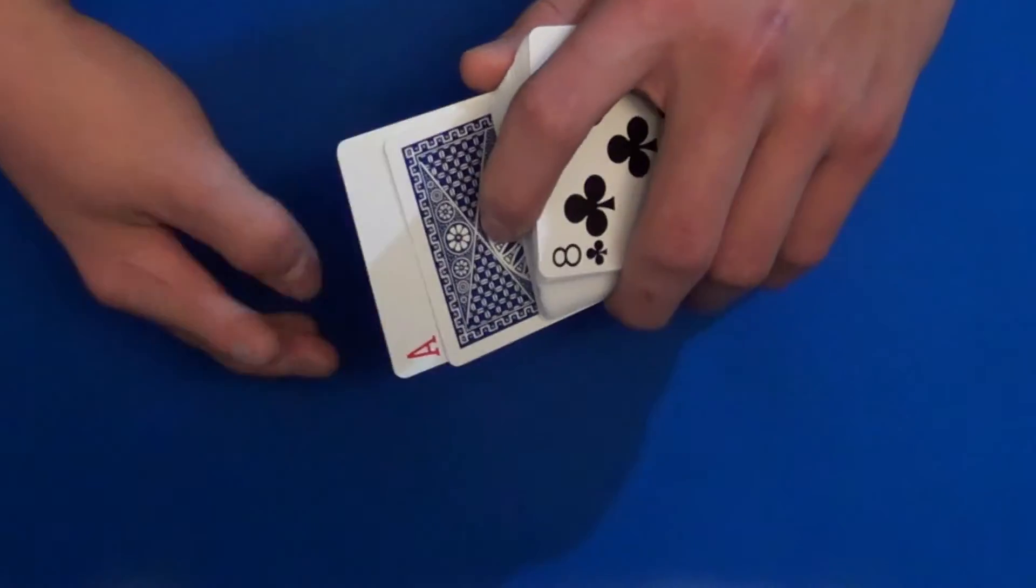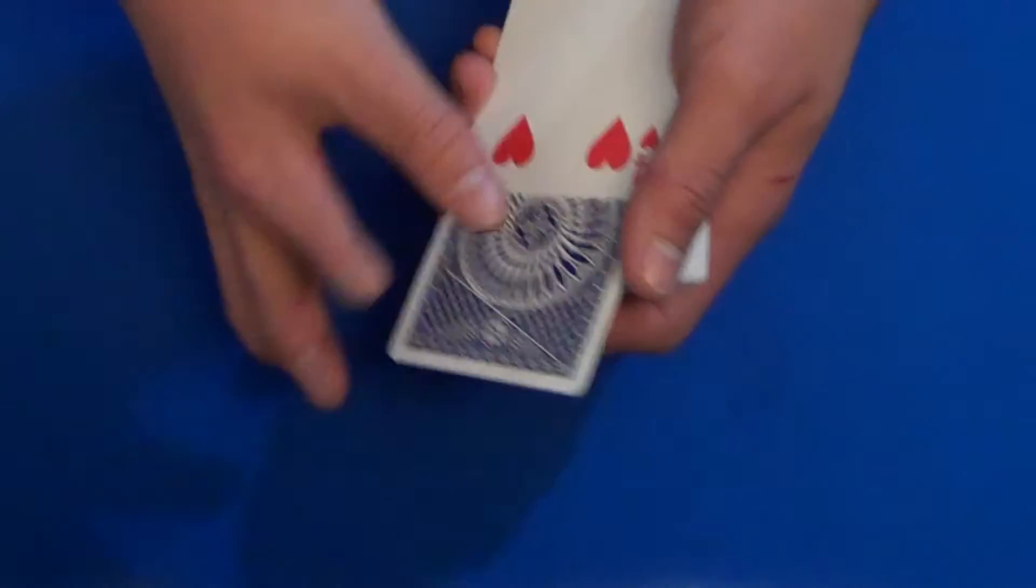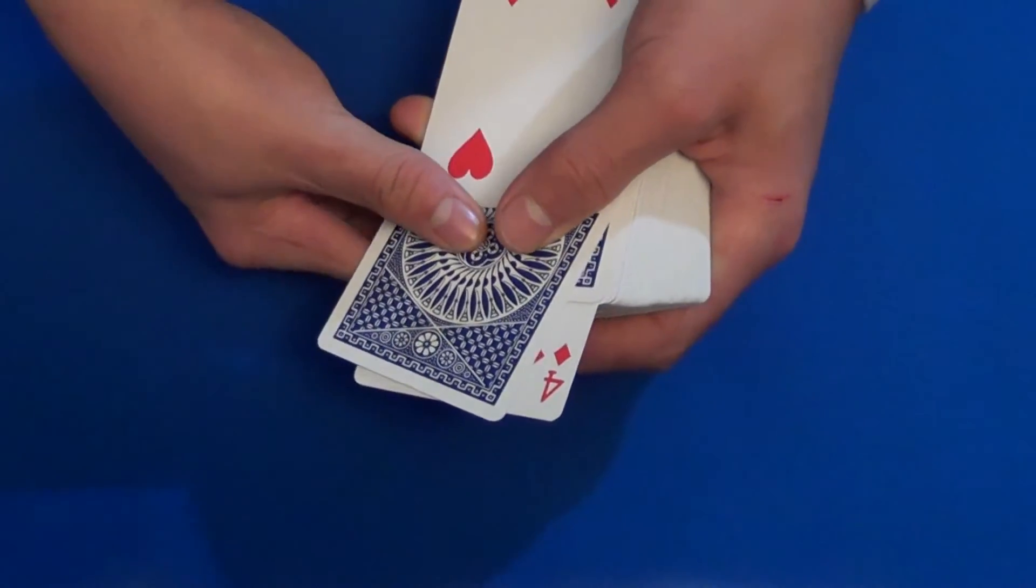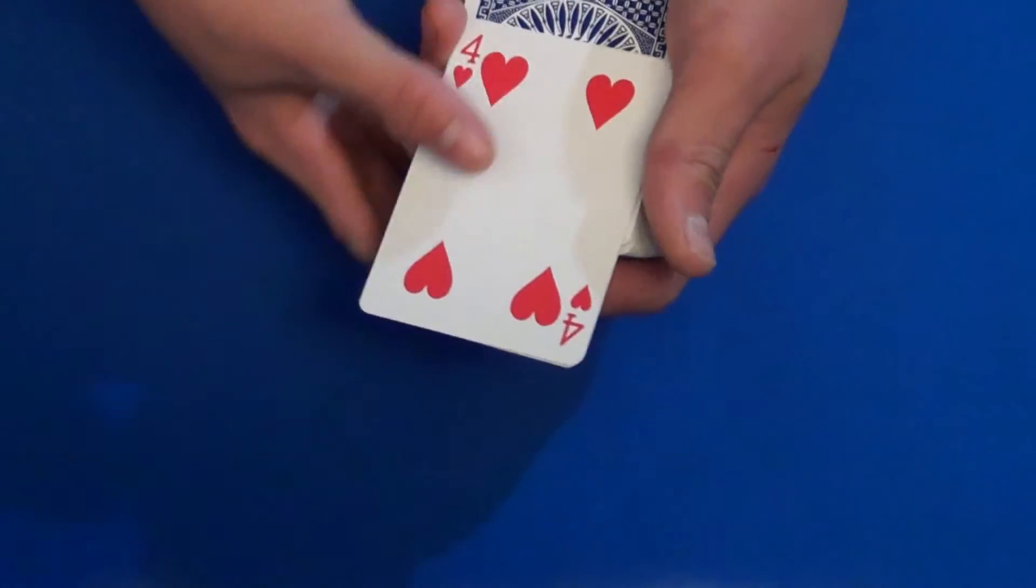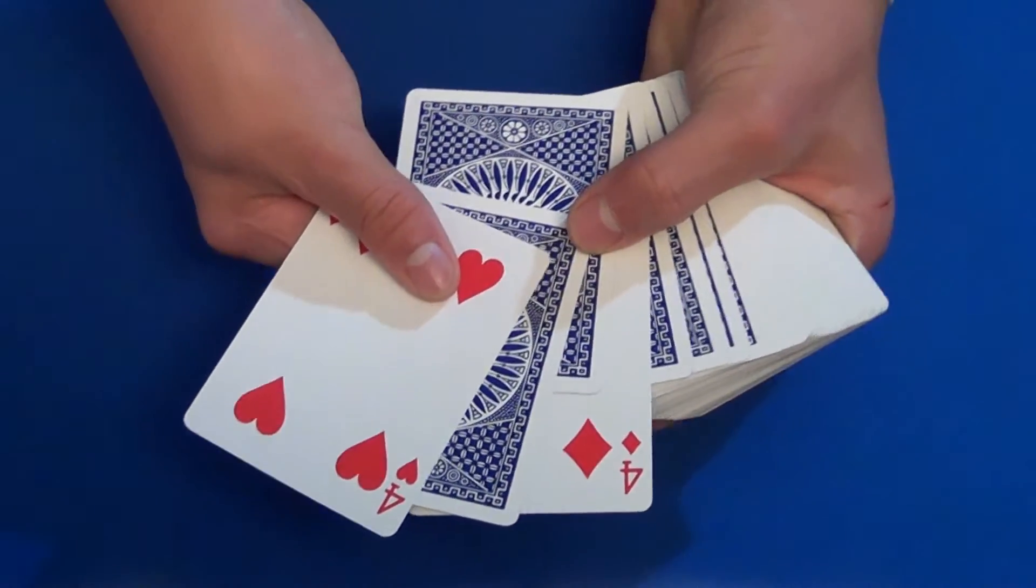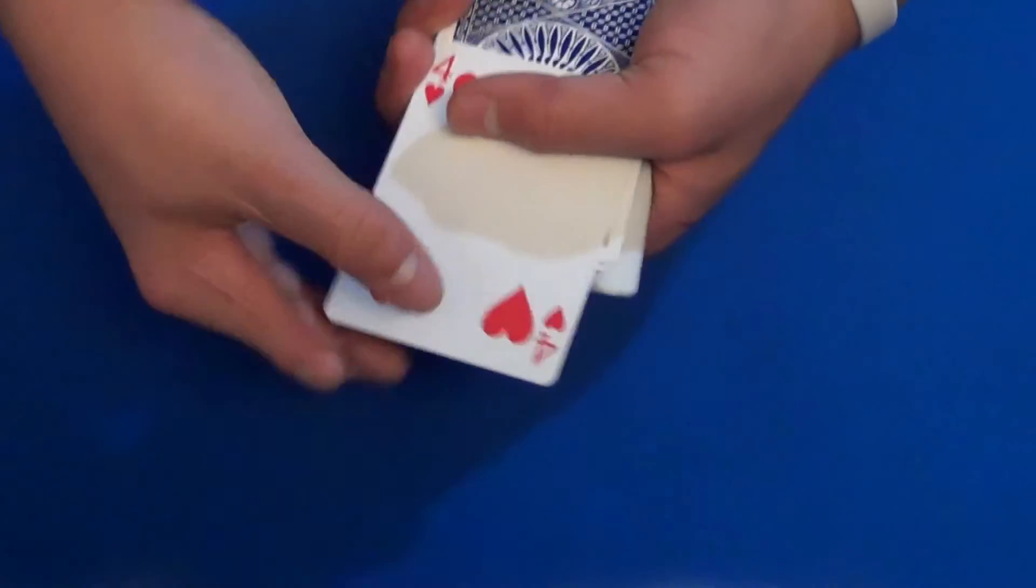Then pull the four back, pull the ace forward - because this card right here is the ace. Now the ace is on top of the four, except there's still a card between. And then you're going to pull the four flush with the rest of the cards.